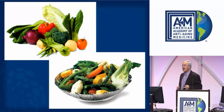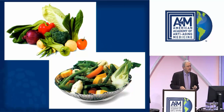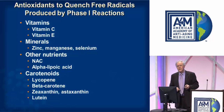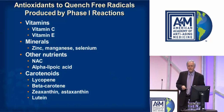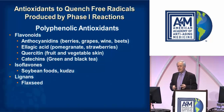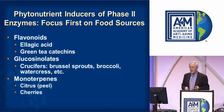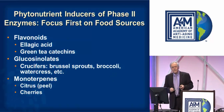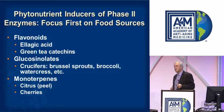The crux of the matter is that we want to eat a rainbow diet — a variety of plant foods of different colors several times each day. These provide the antioxidants needed to quench the free radicals produced by phase one reactions. Examples include polyphenolic antioxidants such as flavonoids, isoflavones, and lignans; flavonoids from ellagic acid or green tea catechins; glucosinolates from cruciferous vegetables; and monoterpenes from citrus fruits and cherries.